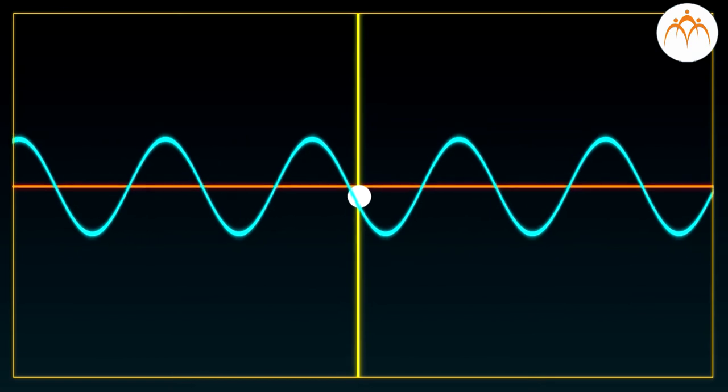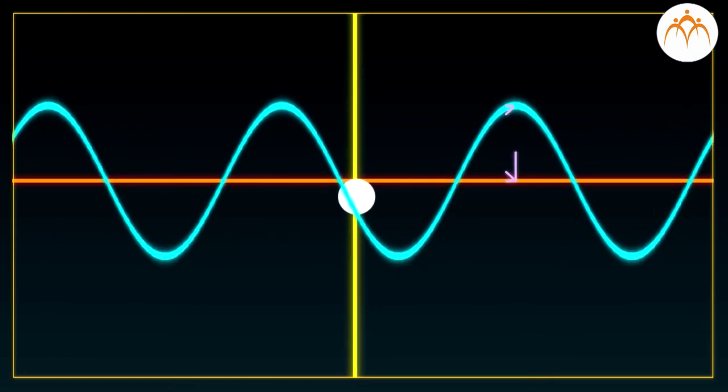As oscillation of the air molecule becomes larger, the sound becomes louder. Maximum displacement of air molecule from its equilibrium position is called as amplitude of the wave.